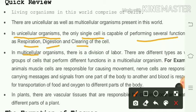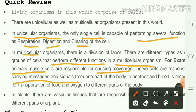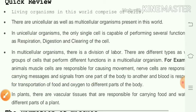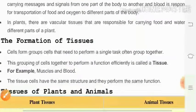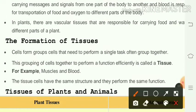There are different types — groups of cells that perform different functions in multicellular organisms. For example, animal muscle cells are responsible for causing movement. Nerve cells are responsible for carrying messages and signals from one body part to another. Blood is involved in transportation of food and oxygen to different parts of the body.